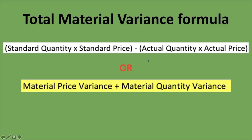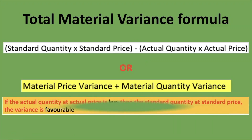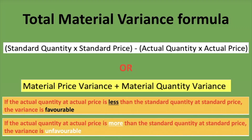How do we analyze the variance? If the actual quantity at actual price is less than the standard quantity at standard price, the variance is favorable — because the amount we spent and used in production is less than what we expected, which is a good thing. But if the actual quantity at actual price is more than the standard quantity at standard price, the variance is unfavorable, because you spent more than you planned to spend.